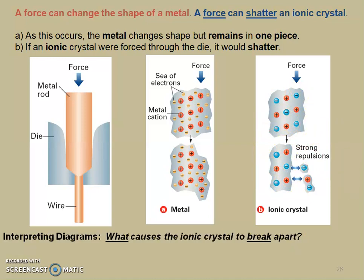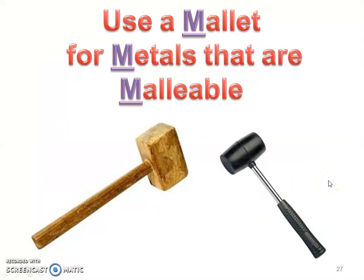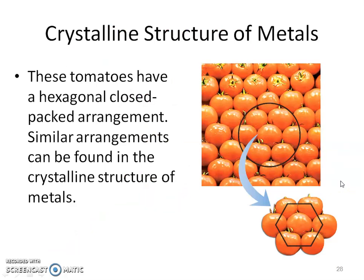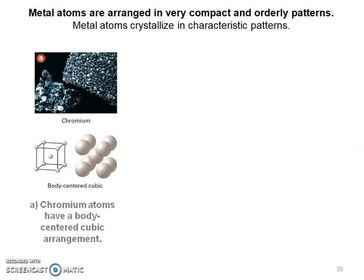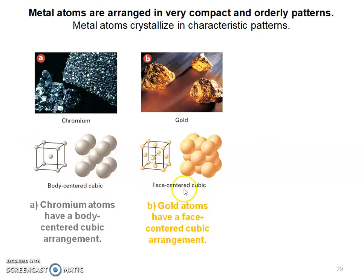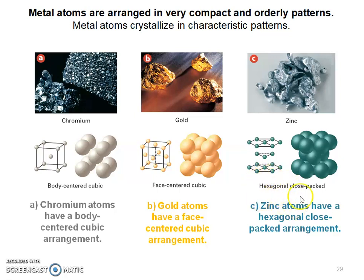I like to remember malleable because we use a mallet for metals that are malleable — hammering them into sheets. Showing that structure: these tomatoes have what's called a hexagonal close-packed arrangement, and we can find something like this in metals as well. Metal atoms are arranged in some kind of pattern. That can look like a body-centered cube, a face-centered cube, or a hexagonal close-packed arrangement. Different atoms of different metals pack in different patterns. We won't need to memorize these, but if you take a college course called Material Science, they dig deep into these patterns.